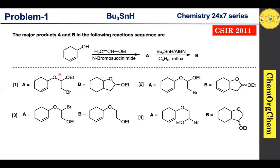This is a problem from CSIR 2011. According to this problem, cyclohexenol reacts with ethyl vinyl ether in the presence of N-bromosuccinimide to produce compound A. This compound A further reacts with tributyltinhydride in the presence of AIBN to produce compound B. You see there are four options. Let's figure out together which one is the correct option for this question.